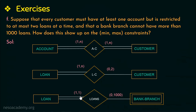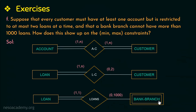The only constraints that change from the earlier question are those belonging to customer and bank branch. For the 'loans' relationship: a bank branch may or may not have loans, so partial participation represented as 0, and as given, one bank branch cannot have more than 1000 loans, so the maximum is 1000, giving min-max (0,1000). Thank you.